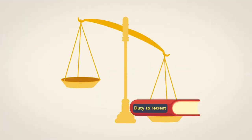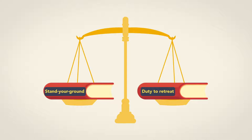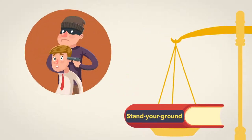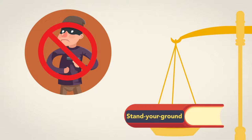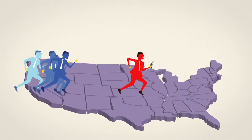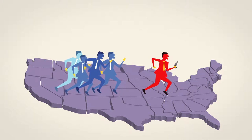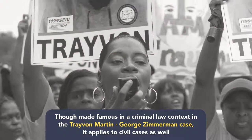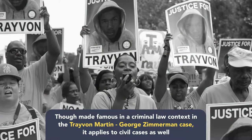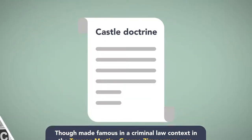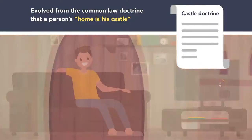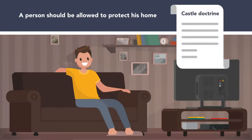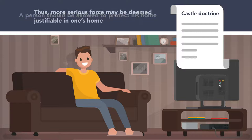The counterweight to the duty to retreat is the stand-your-ground rule. Stand-your-ground jurisdictions do not require retreat when threatened with deadly force, even if retreat can be done safely. In some states, stand-your-ground laws even allow people to pursue their attackers until the danger has subsided. Though made famous in a criminal law context in the Trayvon Martin–George Zimmerman case, it applies to civil cases as well. The castle doctrine evolved from the common law doctrine that a person's home is his castle, and thus a person should be allowed to protect his home, with more serious force deemed justifiable.